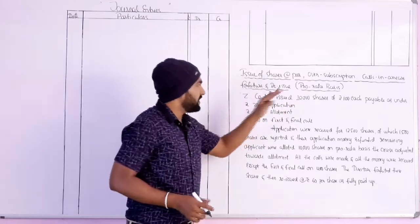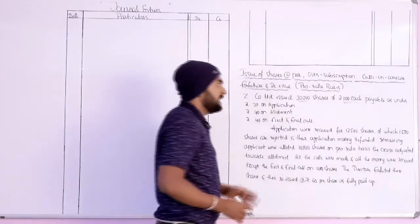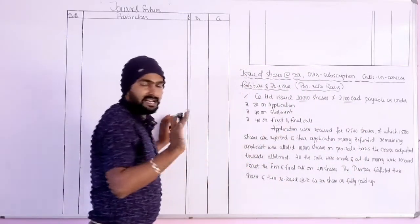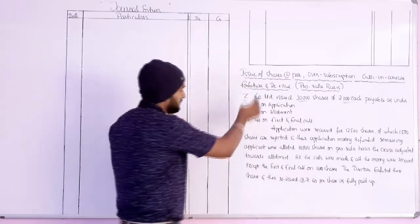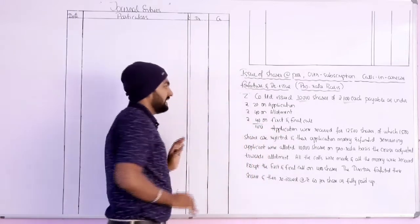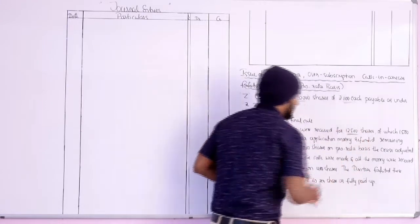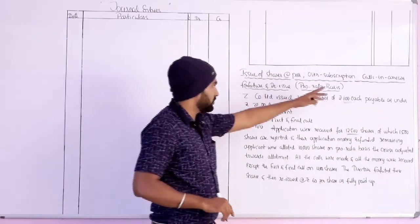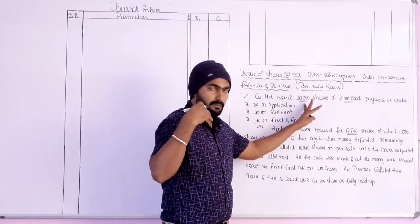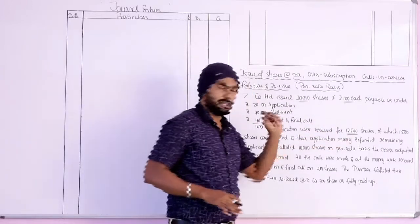Z Company Limited issued 10,000 shares, face value ₹100 each. Payable as: application ₹20, allotment ₹40, first and final call ₹40 — so 100 total on issue of shares. Application was received for 12,500 shares, so oversubscription. We issued 10,000 shares but application came for 12,500 shares.